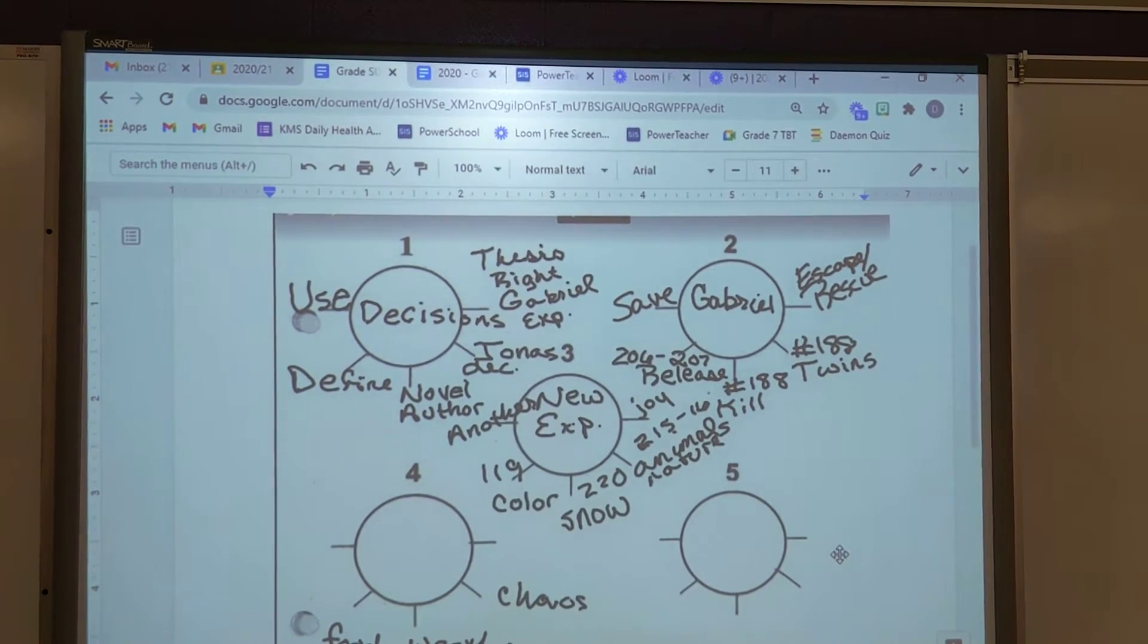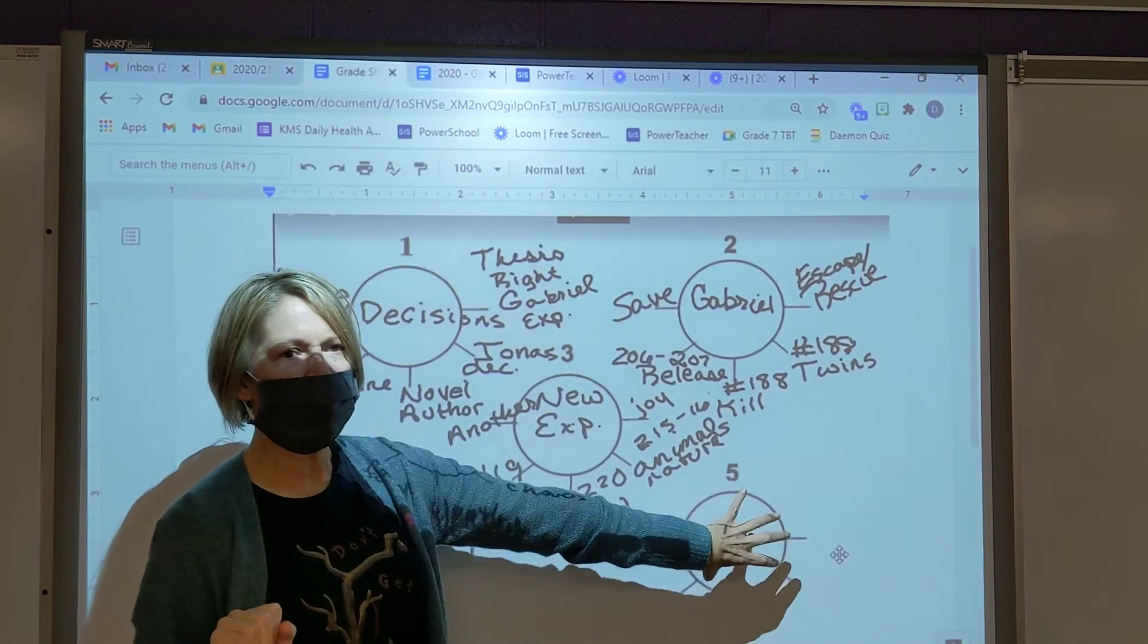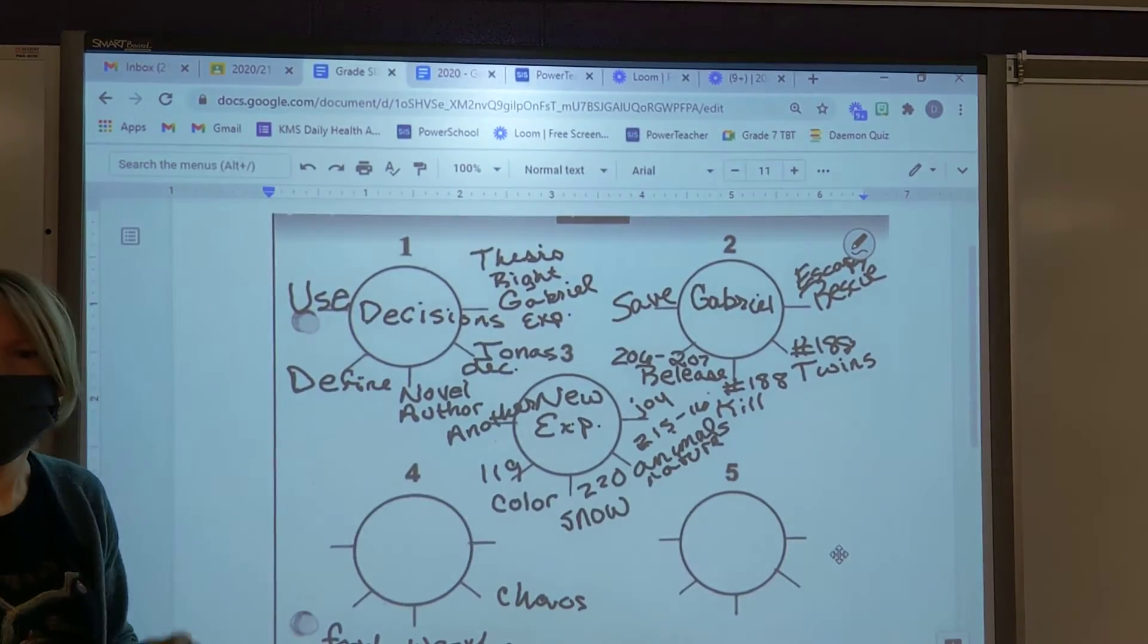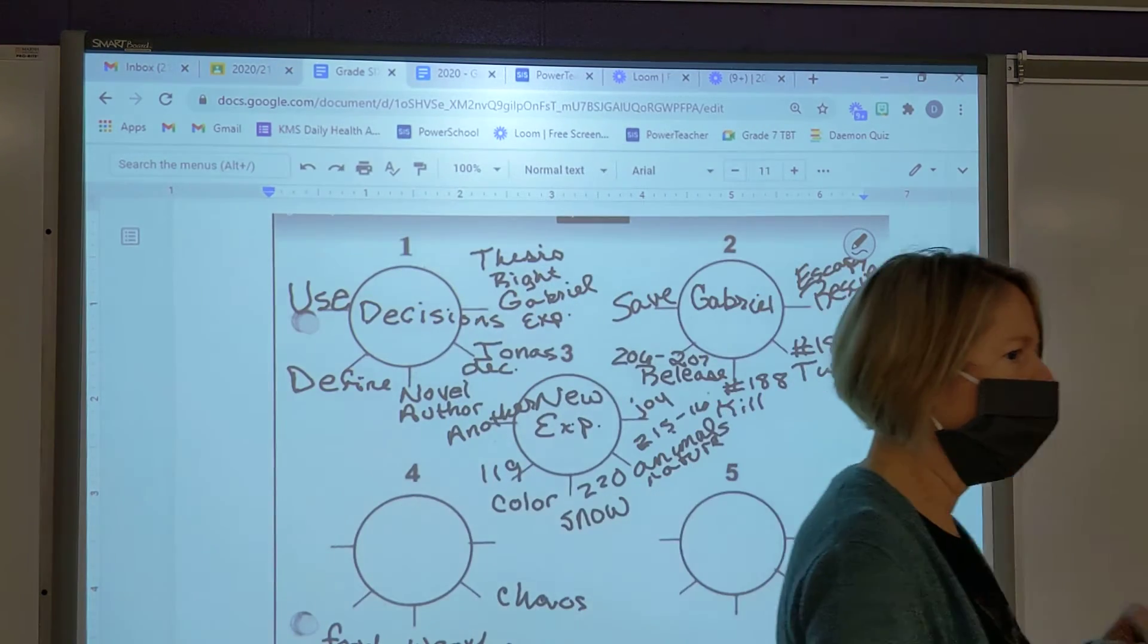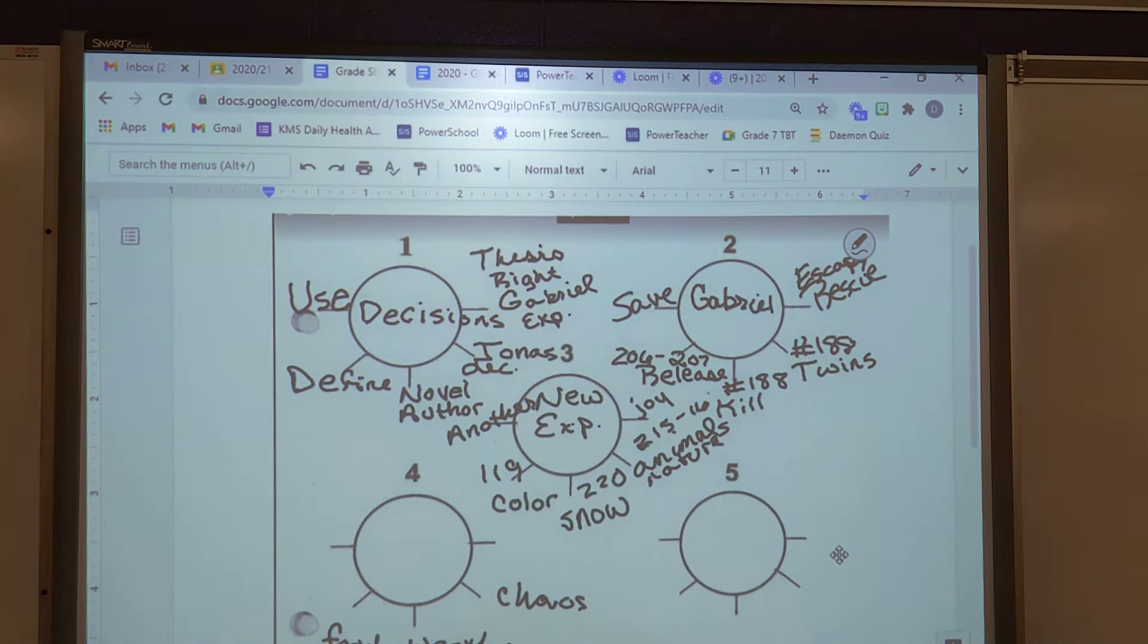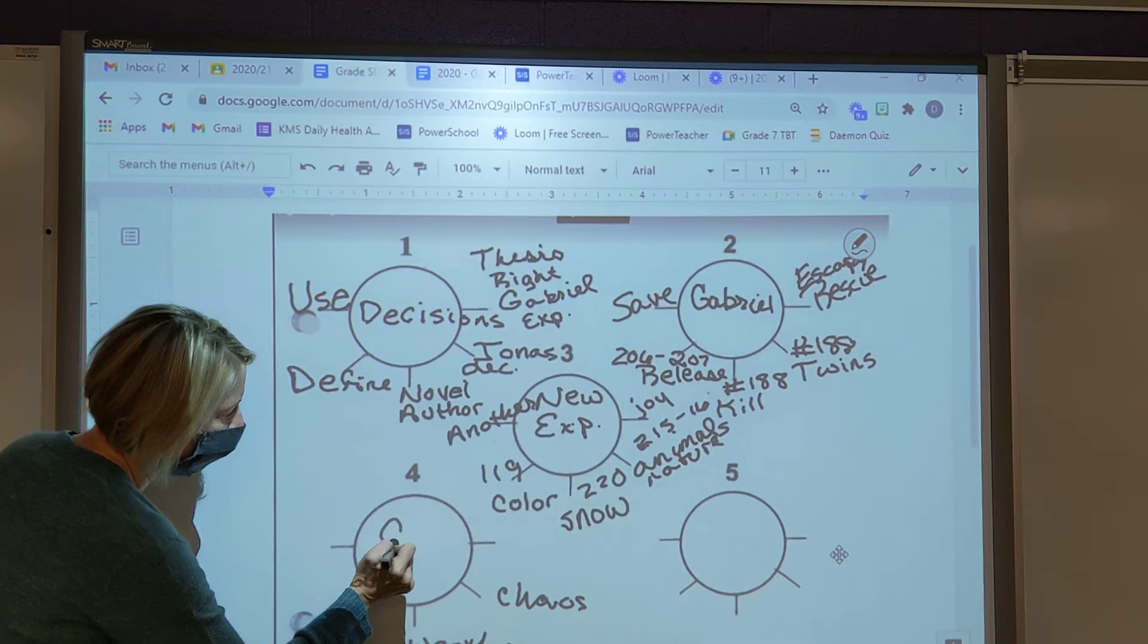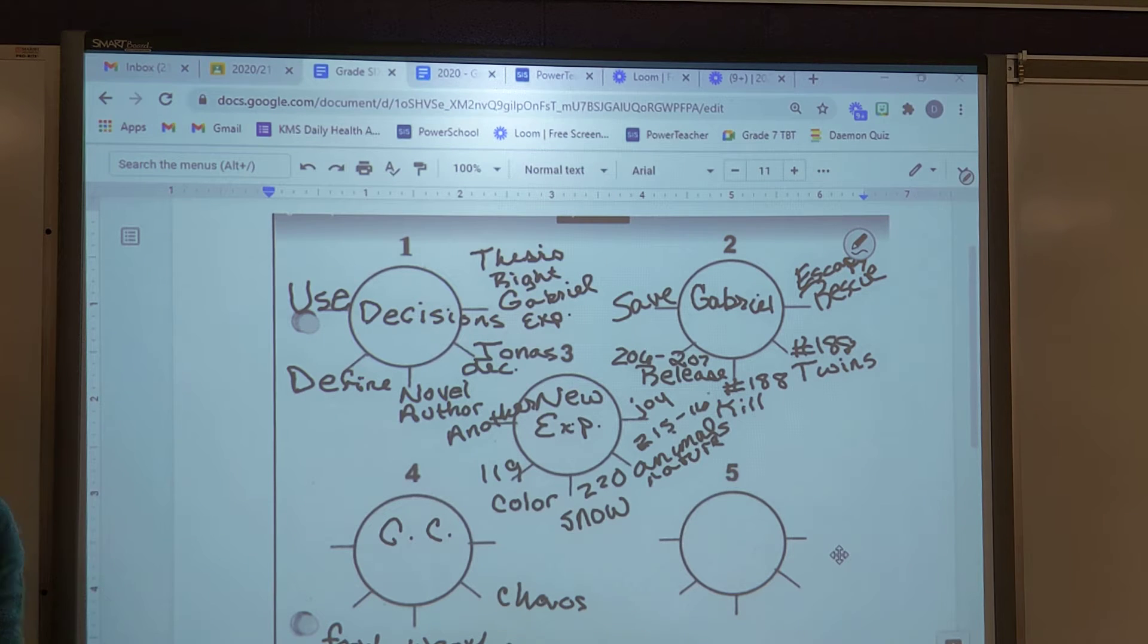Okay, so today we're going to finish wheel four of our planning and wheel five. Who remembers what wheel four is? If this is an argument, what is the fourth paragraph of the fourth wheel? Brooke, it's acknowledging the other side's opinion. We abbreviated CC for counter claim.